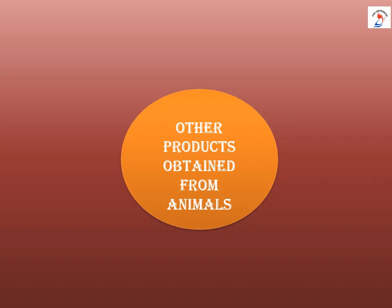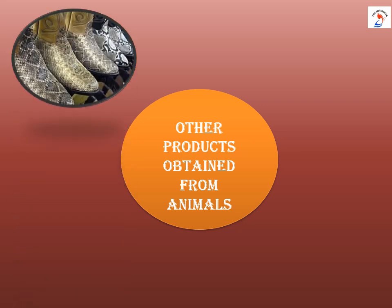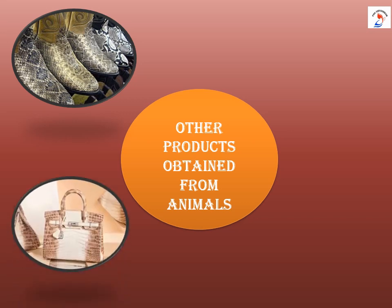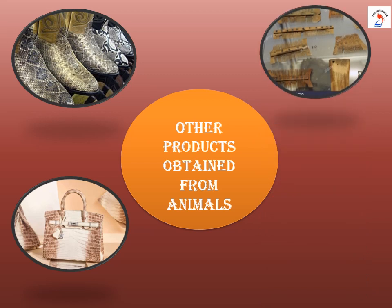In this module we will learn about the other products obtained from animals. First come shoes made from snakeskin, next is the lovely handbag, and next are hair brushes.